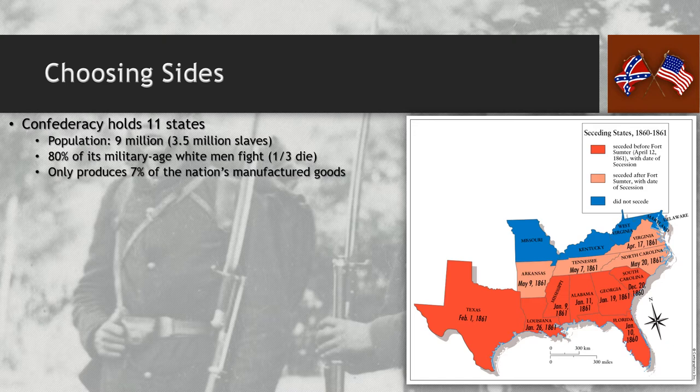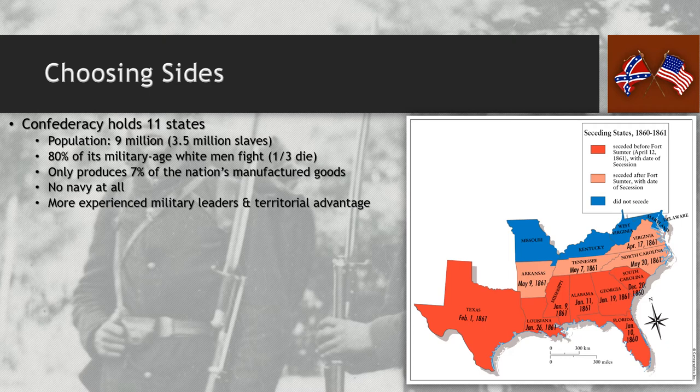The South does produce a lot of agriculture, but most of it is not consumable — it's cotton, tobacco, non-consumable cash crops. Thinking it can outlast the North by the food it can grow is actually very unreasonable. The South also has no navy to speak of. The Union has a standing navy used primarily for port defense against foreign invaders — it's a defensive navy, not really an offensive one.